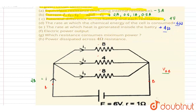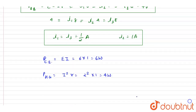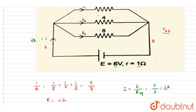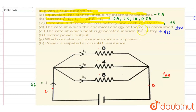The electrical power output equals the total generated energy minus the heat generated inside the battery: e×i − i²r = 12 − 4 = 8 watts. Wait — let me note: the transcript states 6 − 4 = 2 watts for power output, using e×i = 6×1 in that step.